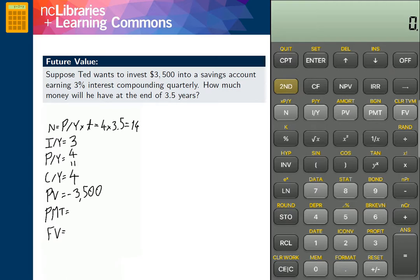We are not making regular payments into this account, therefore PMT will be set to 0. And now we are ready to compute the future value, FV.